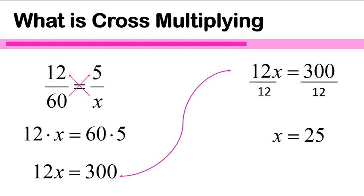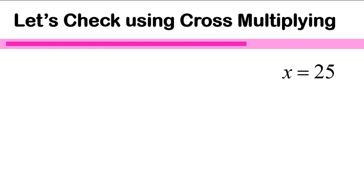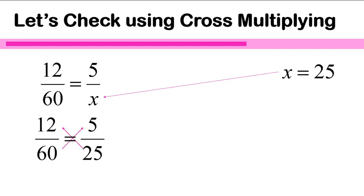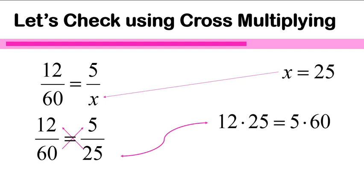Once you have an answer, you can check your work using the same method. I'm going to substitute the answer that I have, 25, back into this equation. Is 12 over 60 equal to 5 over 25? I'm going to do my cross-multiplying — 12 times 25 and 5 times 60. Notice I changed the order. I did that on purpose to show you it doesn't matter if I do 25 times 5, or 25 times 12, or 12 times 25.